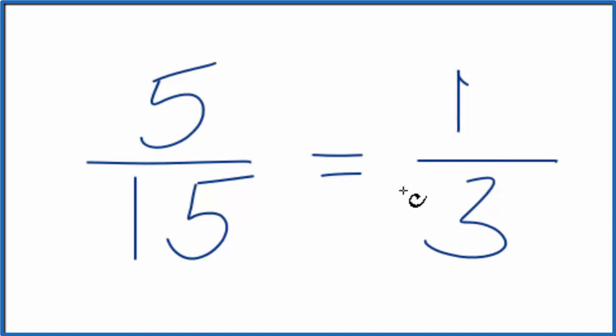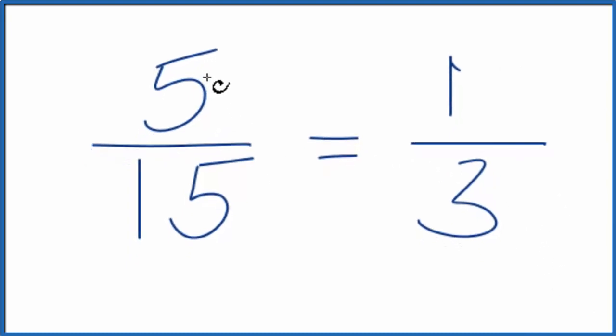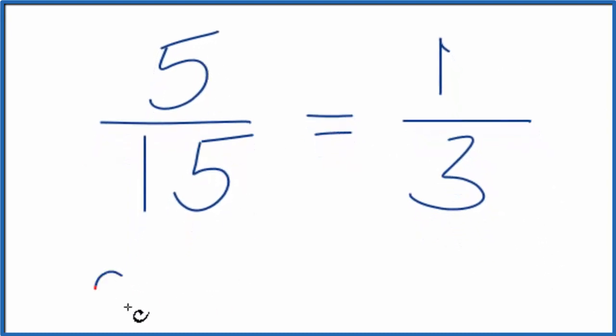We can't reduce or simplify this any further. If you check this on your calculator, if you divide 5 by 15, you get 0.333. Those threes are repeating. Put a little bar over it. If you divide 1 by 3, you get 0.333. Again, they're repeating.